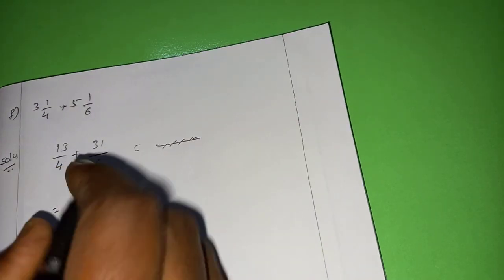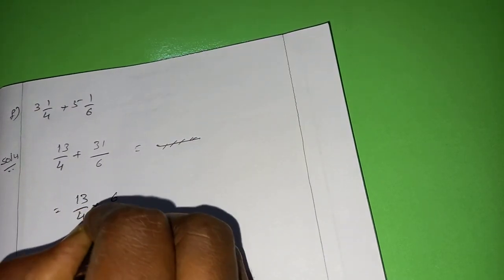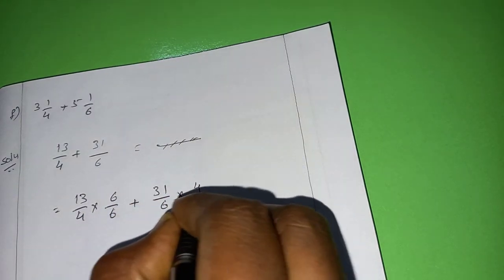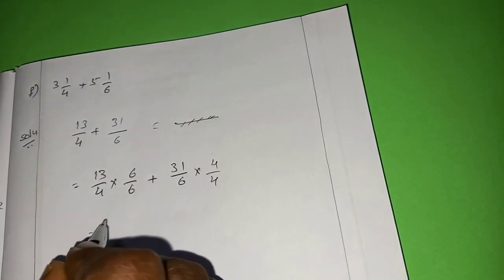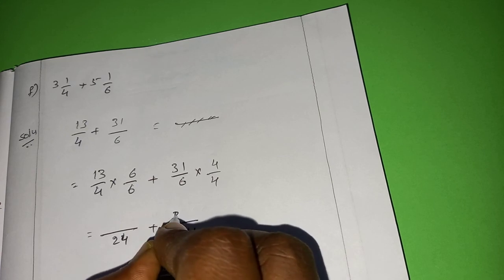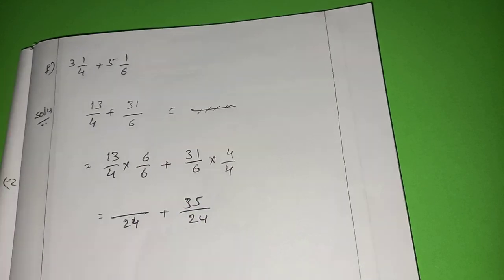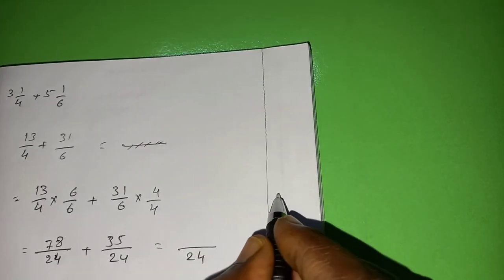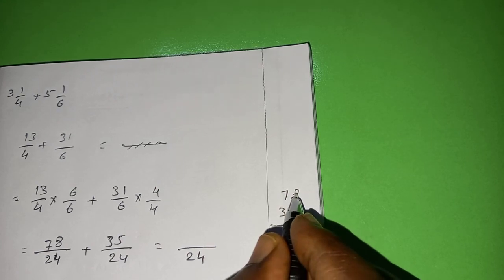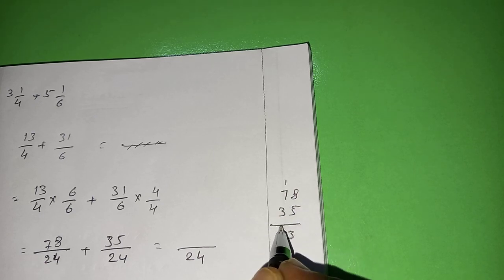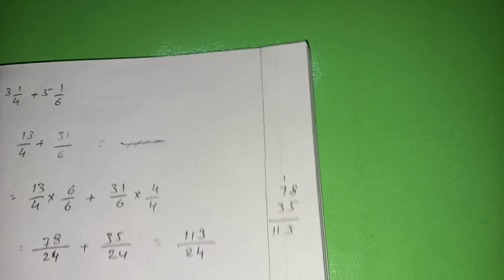Now: 13 by 4 into 6 by 6 plus 31 by 6 into 4 by 4, so the denominators become equal. 6 times 4 is 24. 13 times 6 is 78. 31 times 4 is 124. Now add the numerators: 78 plus 124. The result is 202 by 24.